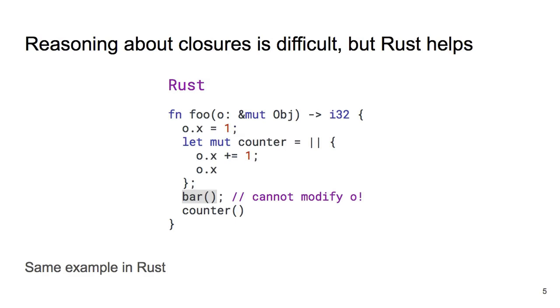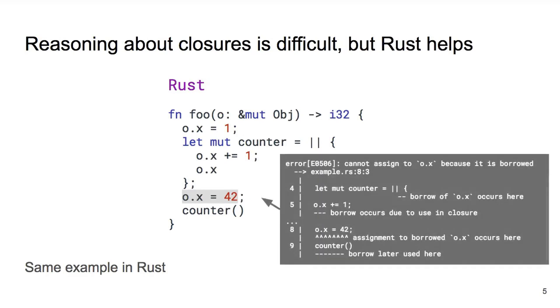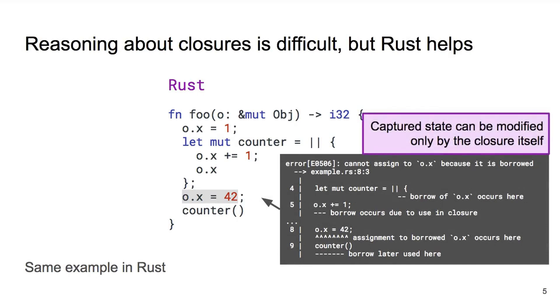Crucially, no matter what the definition of bar here is, we know that it cannot modify our object. If we simply inlined the problematic bar definition from before, we will see that the Rust compiler will raise an error. The error is helpful and verbose and we can summarize it as the state captured by a closure can only be modified by that closure itself.